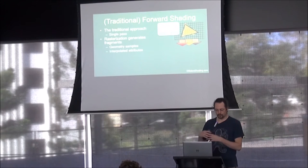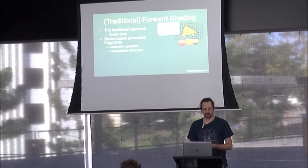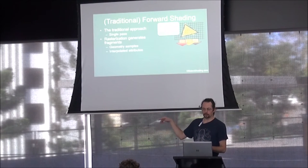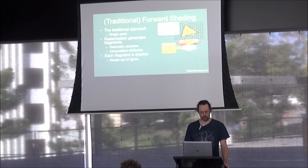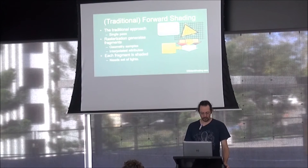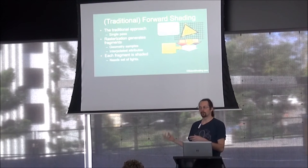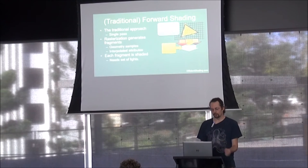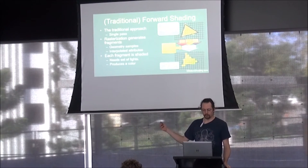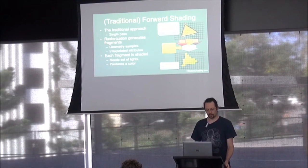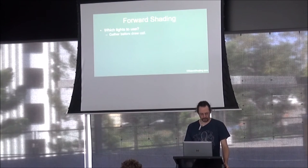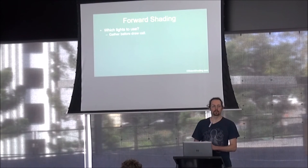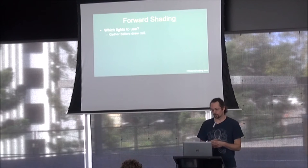You submit your geometry, rasterize your triangles, generate fragments with interpolated properties and depth, then feed those into a shader. You can do vertex shading as well but that's an optimization. At that point you need to get information about lights to compute the final shading, and the resulting color is merged into the framebuffer. The crux is working out which lights you're going to use with every bit of geometry.